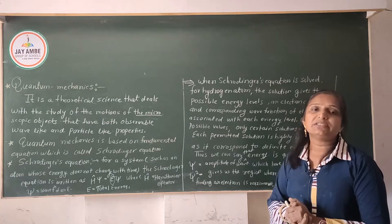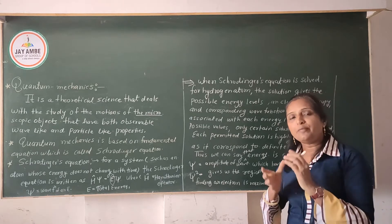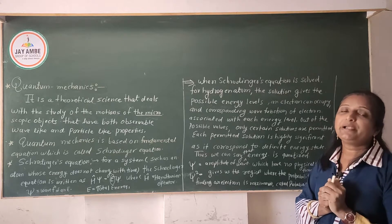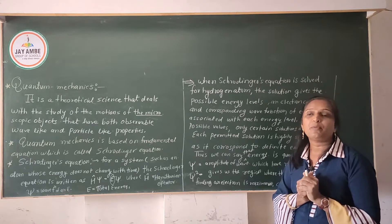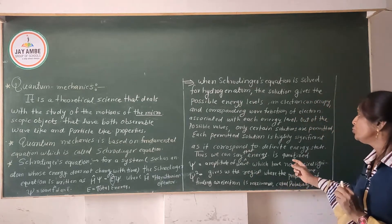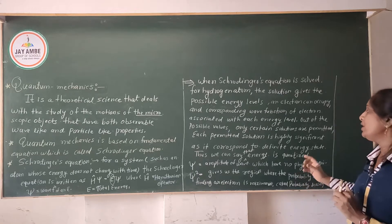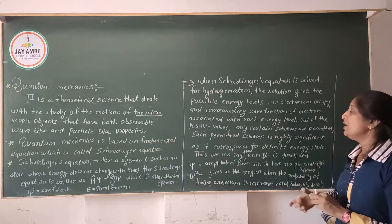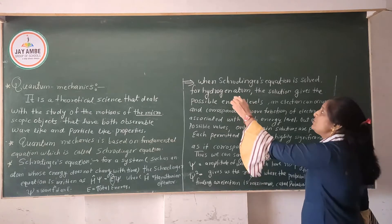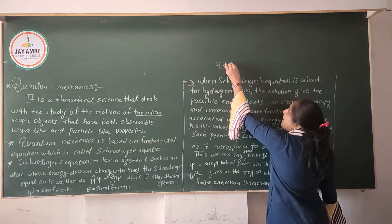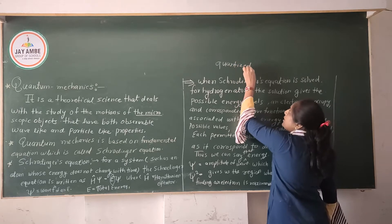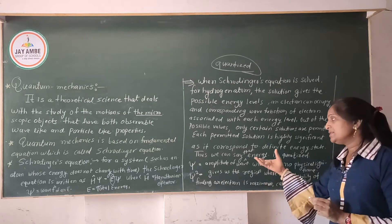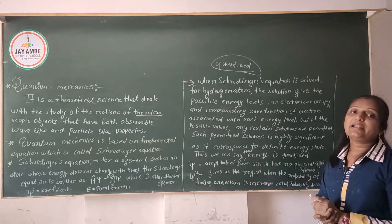From all the possible solutions, only certain values are permitted, and these permitted values are very significant because they correspond to a definite energy state. We can say that energy is quantized — meaning only certain specific defined energy values are possible, and this is how energy is quantized.